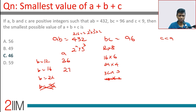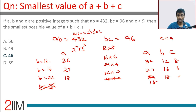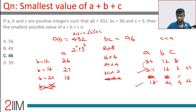If b is 24, that is 2 cube into 3, then a should be 18. So our candidate solutions are: a=36, b=12, c=8; or a=27, b=16, c=6; or a=18, b=24, c=4. Comparing the sums: 27+16+6 = 49; 36+12+8 = 56; 18+24+4 = 46. So 46 is better — a=18, b=24, c=4 is the answer.